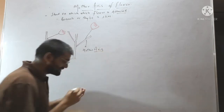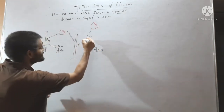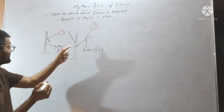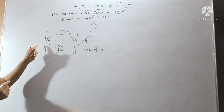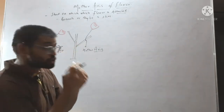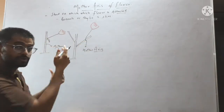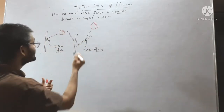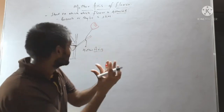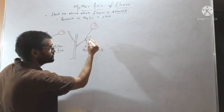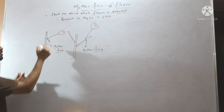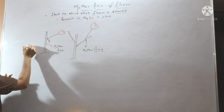So the mother axis is an axis — it may be a branch or a main stem. Here, the branch is a mother axis; here, the main stem is a mother axis. Both are shoots. It is a shoot on which the flower is attached. Here, the flower is attached on this branch; in this case, the flower is attached on this main stem.